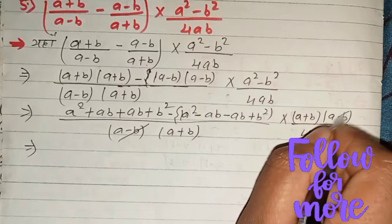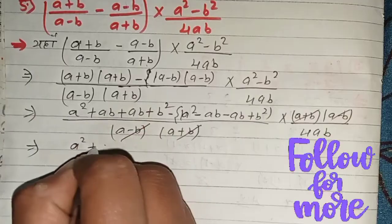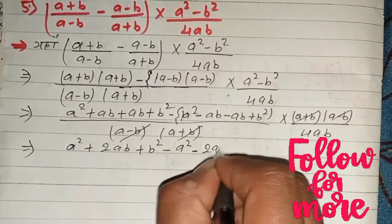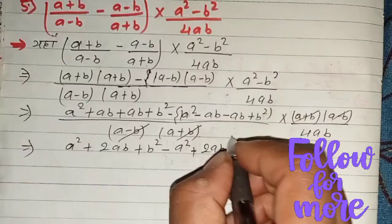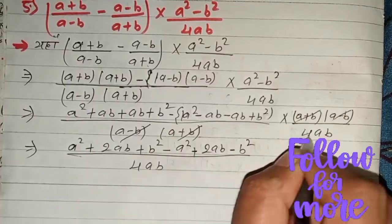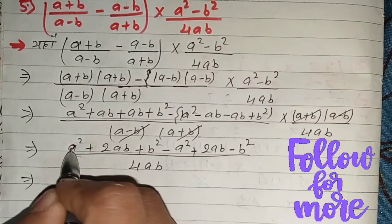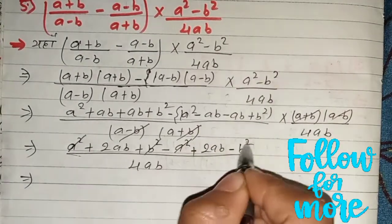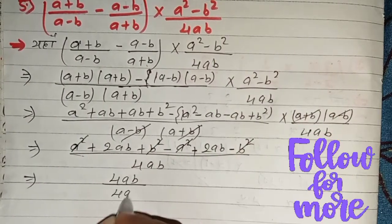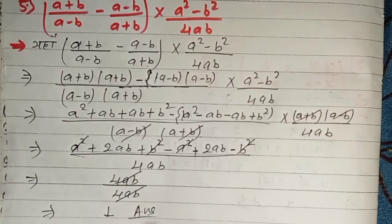Is equal to: a square plus 2ab plus b square, minus a square minus b square, upon 4ab. Is equal to: a square and a square and b square and b square. 2ab is equal to 4ab. 4ab is equal to 4ab. 4ab is equal to 4ab. Answer is 1. 1 is equal to answer.